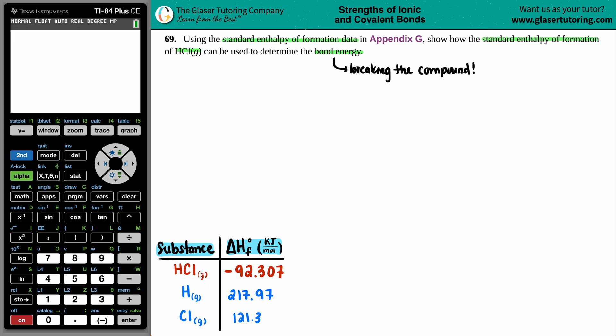In essence, we want to find out the bond energy of HCl gas, so we have to break that compound up. We want to break that bond. And if we're breaking the compound, that means that has to be on the reactant side. So I'm going to say that we have HCl gas, and I want to break that up.